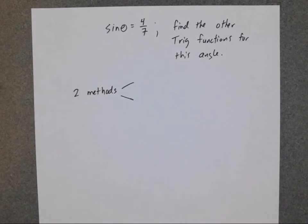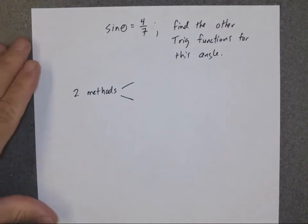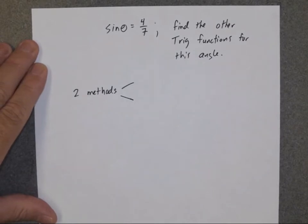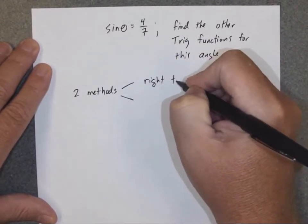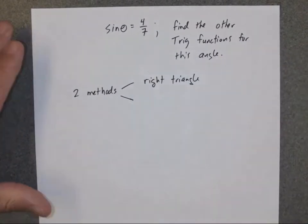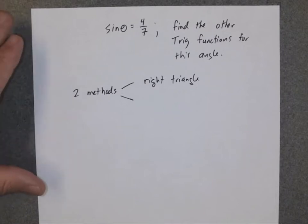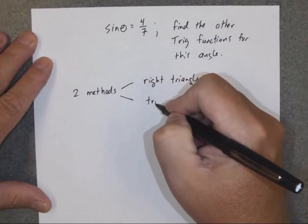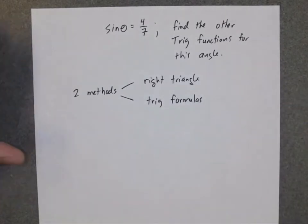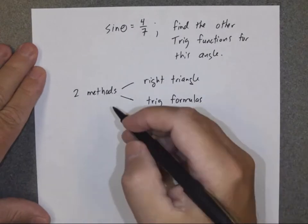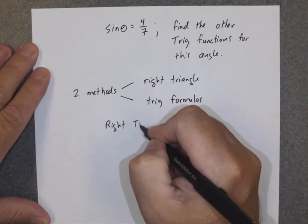I prefer one way and for the rest of this class that's what I'll use most of the time, but there is a second way and I'm not sure my way is the easier way. I just prefer it, and I will show you both methods. You can use whichever method works for you — they both should work correctly. One method is going to use a right triangle, and the second method uses what I call trig formulas or trig equations. Let's first solve this problem using the idea of a right triangle.